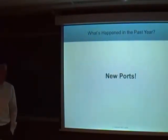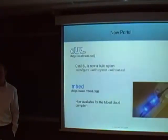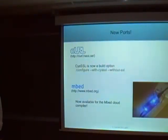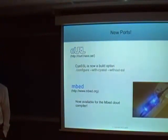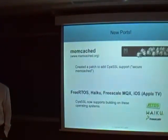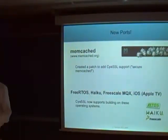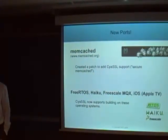In addition to technical work, we've done a lot of ports to new chips and software packages. CYASL is now a build option in cURL. We ported CYASL to the mbed embedded prototyping board — it's available for their cloud compiler, both the library and a client example, which you can download from the mbed website. Memcached is a dynamic memory object caching system used to alleviate server load in dynamic web applications, and we made a patch to enable CYASL use in that — we call it secure memcached, to be released in the next couple of months.